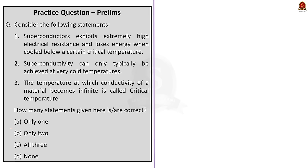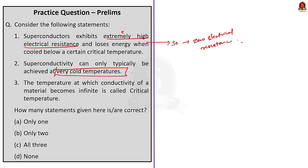Question 2: Consider the following statements. Statement 1: superconductors exhibit extremely high electrical resistance and lose energy when cooled below a certain critical temperature — this is entirely wrong. As we know from our discussion, a superconductor exhibits zero electrical resistance and results in expulsion of magnetic fields when cooled below critical temperature. So statement 1 is incorrect. Statement 2: superconductivity can only typically be achieved at very cold temperatures — this is correct. Statement 3: the temperature at which the conductivity of a material becomes infinite is called the critical temperature — this is also correct. So only the first statement is incorrect and the correct option is option B.